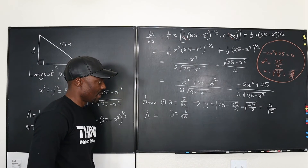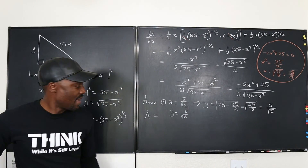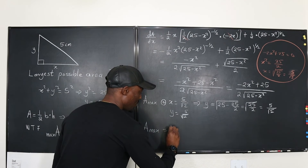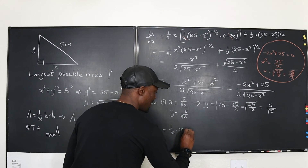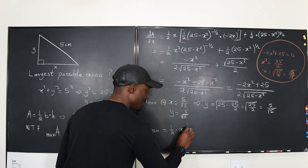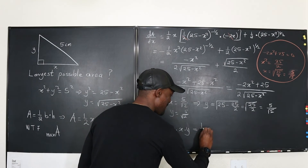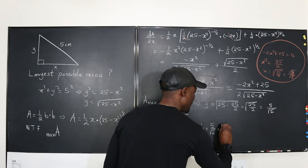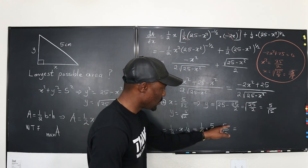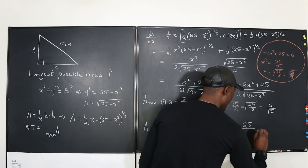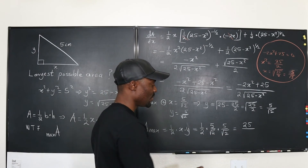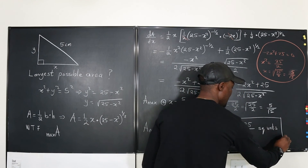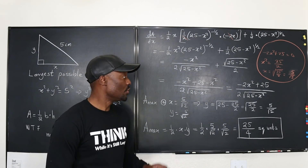So the maximum area equals one half times the base x times the height y, which is one half times (5 over square root of 2) times (5 over square root of 2). That gives us one half times 25 over 2, which equals 25 over 4 square units. This is the maximum area you can obtain using this method.